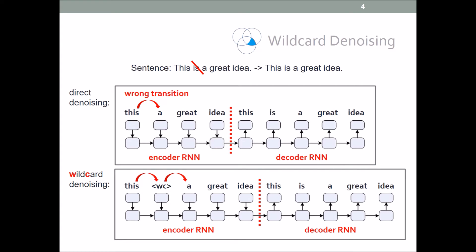In wildcard denoising, we use an additional word, wildcard, to represent the deleted word. This way, the model will learn the correct transition from 'this' to wildcard, and from wildcard to 'a.'